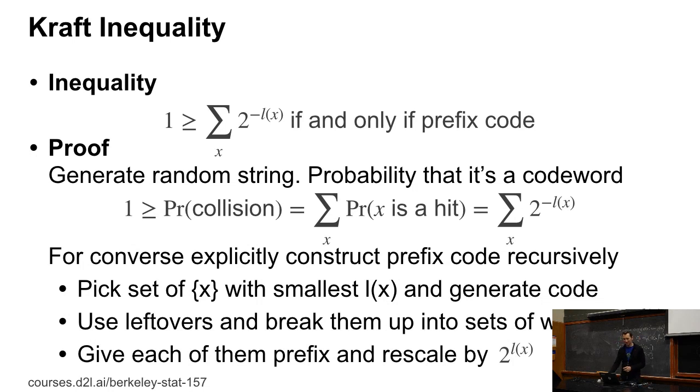Okay. So this is a pretty powerful inequality. And to prove it, it's actually not that hard. So first of all, we want to prove that this sum actually, if we have a prefix code, is bounded by one. So what we can do is we can just look at all the collisions. So basically, I go and generate a random string and I look at the probability that this random string actually happens to be a codeword. Now, if I sum over all those probabilities, that has to be bounded by one, because I can only hit at most one codeword.